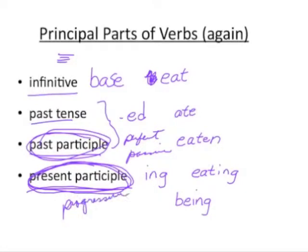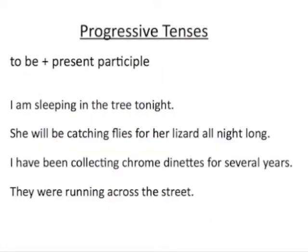The progressive tense is also sometimes called the progressive form or the continuous form — they're the same thing. The formula for the progressive tenses is: the auxiliary 'to be' plus the present participle, the -ing form.